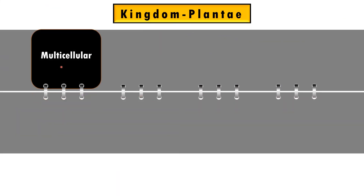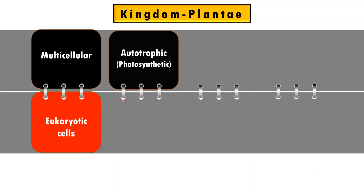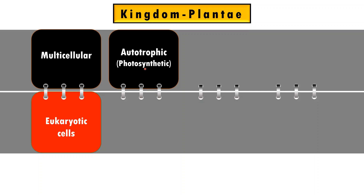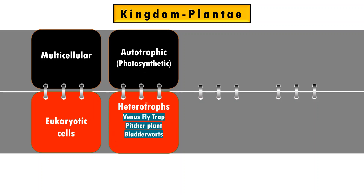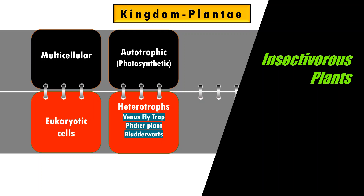Students, all members of Kingdom Plantae are multicellular and eukaryotic in nature. They are mostly autotrophic, that is photosynthetic in nature, but some of them are heterotrophic. Among heterotrophs, some of them are insectivorous plants such as Venus flytrap, pitcher plant, and bladderworts.